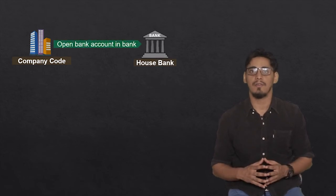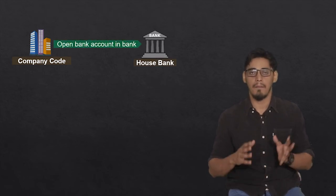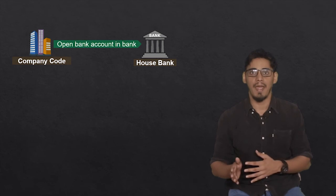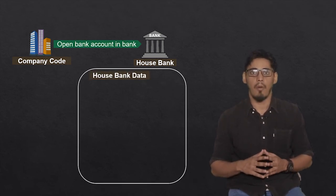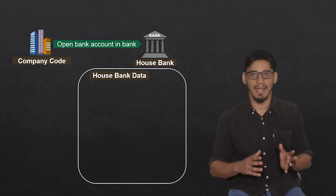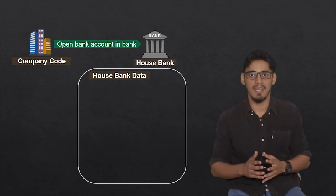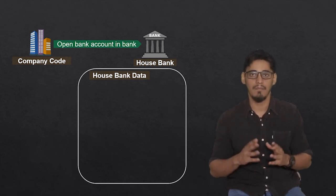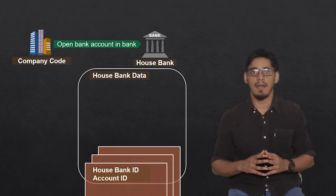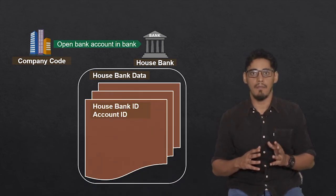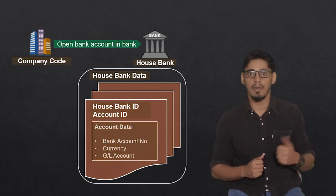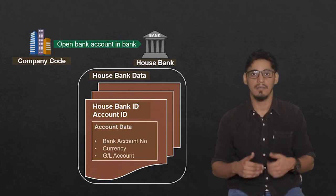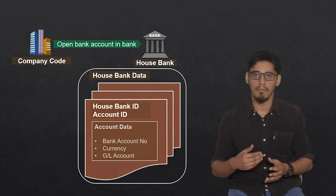Now if your company decides to open a bank account in your house bank, they have to maintain certain additional data for the combination of house bank and account ID, which is maintained at the company code level. That data contains information for the bank account such as account number, account currency, and the GL account, which is your main bank GL account.